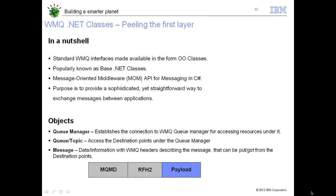We will go layer by layer and see how each of these helps the business. To start with MQ.NET classes, which are based on MQI — MQ Interface — in a nutshell, they are the standard MQ interfaces made available from all classes, and popularly known as Base .NET classes.